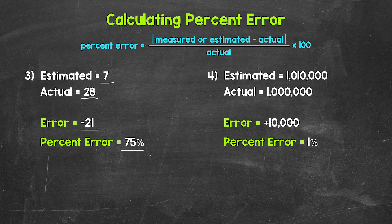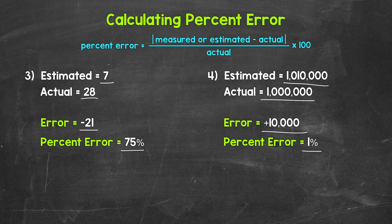Now looking at number four, the estimated value is 1,010,000 and the actual value is 1,000,000. That means the estimate was off by 10,000 — specifically, the error was positive 10,000, which tells us the estimate was higher than the actual value. An error of 10,000 may sound like a lot, but because of the size of the numbers we are working with, we have a percent error of only 1%. That's a close estimate — only 1% off the actual value. If we just compared the errors between numbers three and four — off by 21 compared to off by 10,000 — we would think number three was a better estimate by a lot. But looking at the percent errors, number four is actually a much, much better estimate than number three.